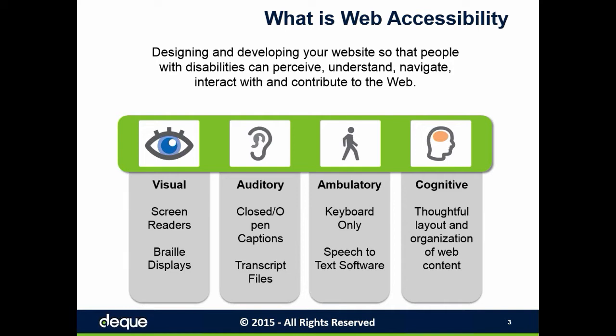This includes audio files or video files. In our third category, the ambulatory or motor skill category, it's people with difficulties or inability to use a mouse who may only be using a keyboard to navigate the website or possibly even speech-to-text software. In our fourth and final category, it's the cognitive level disabilities — people with learning disabilities or the inability to remember or focus on large amounts of information. They may rely on thoughtful layout and organization of content and possibly use an array of the assistive technologies already mentioned.